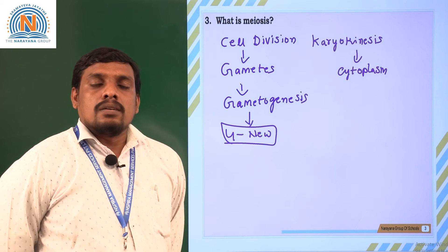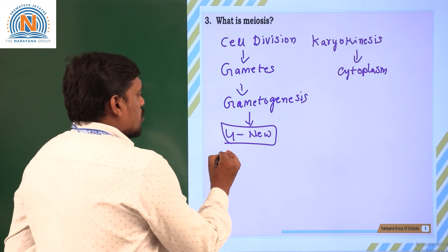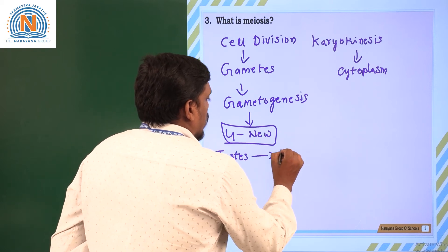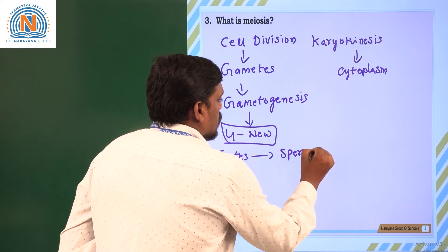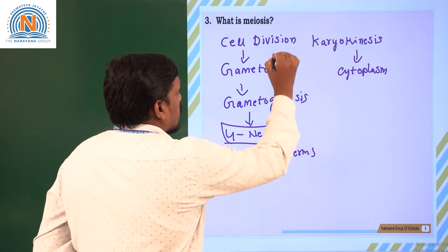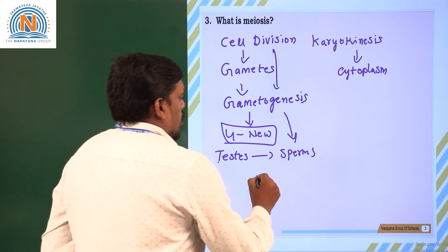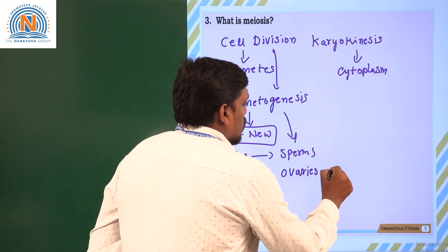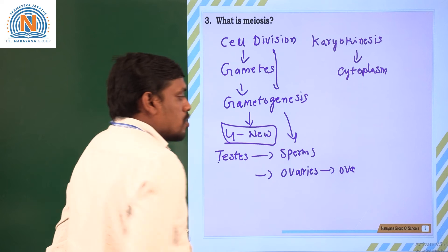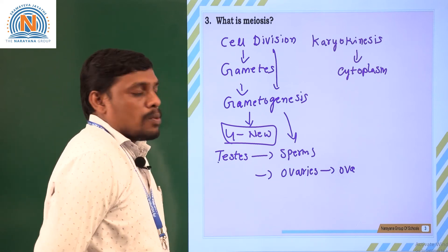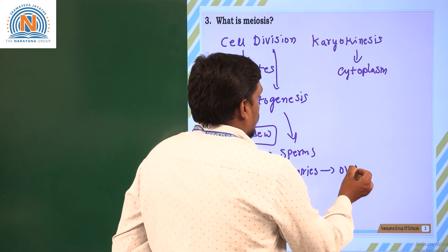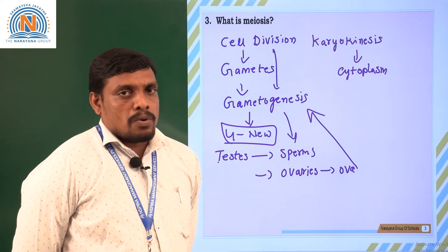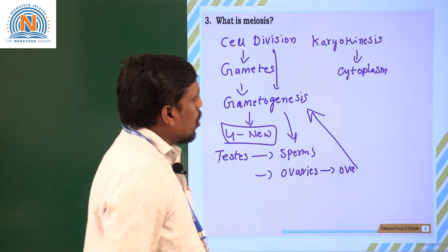In humans, testes are male reproductive organs that produce sperms through gametogenesis, which involves meiosis. In females, ovaries produce ova — female gametophytes — by the process of gametogenesis through meiosis.